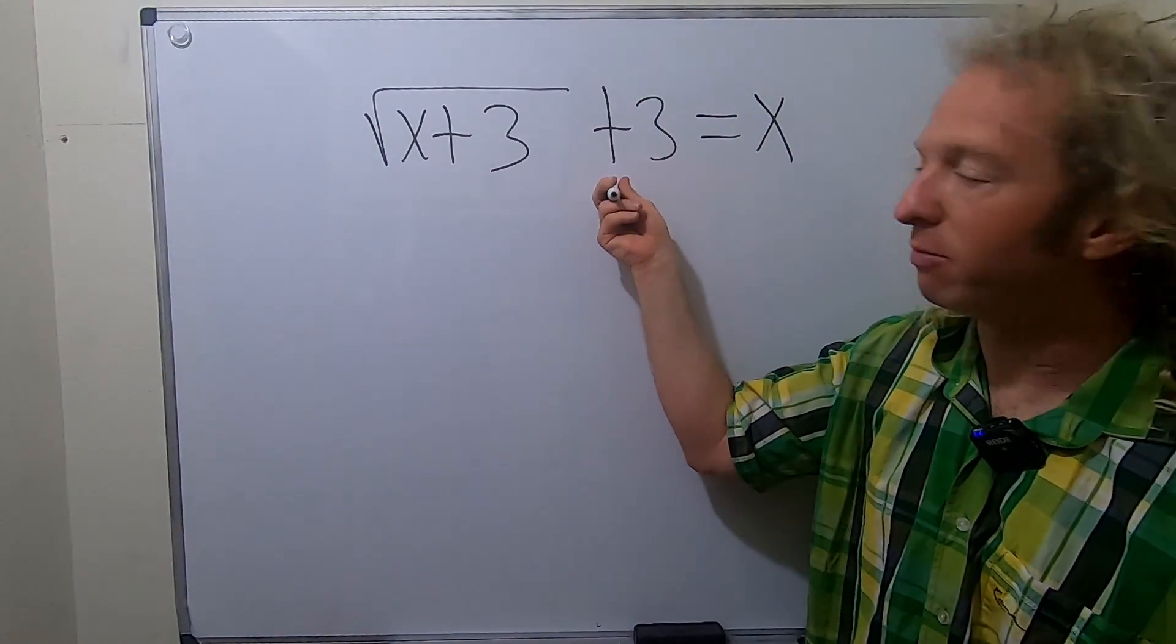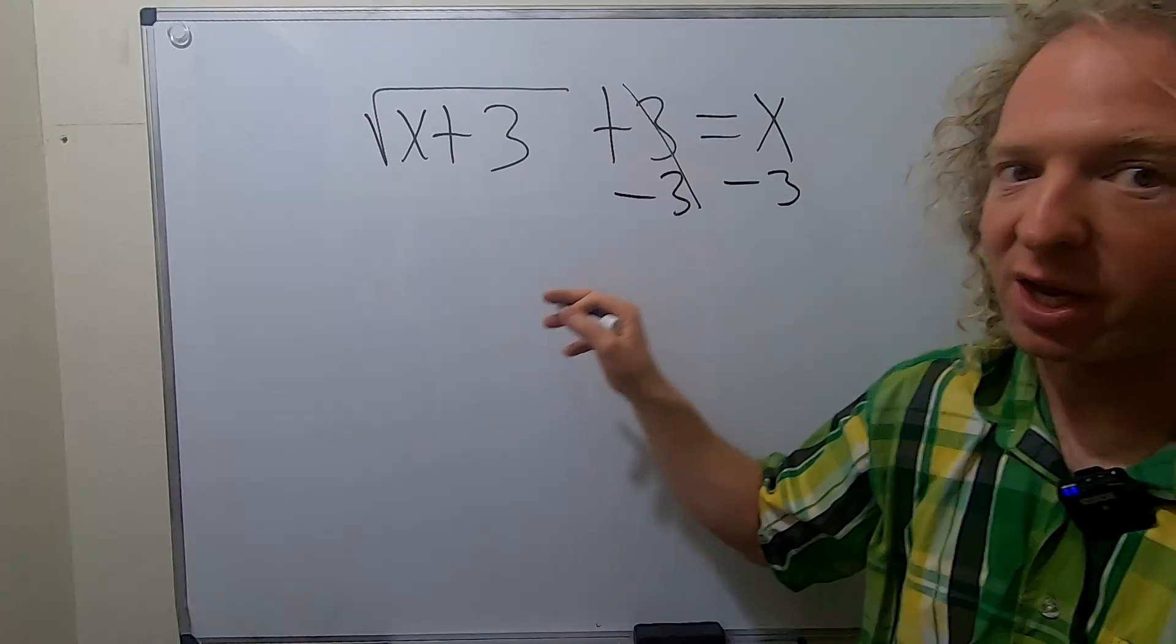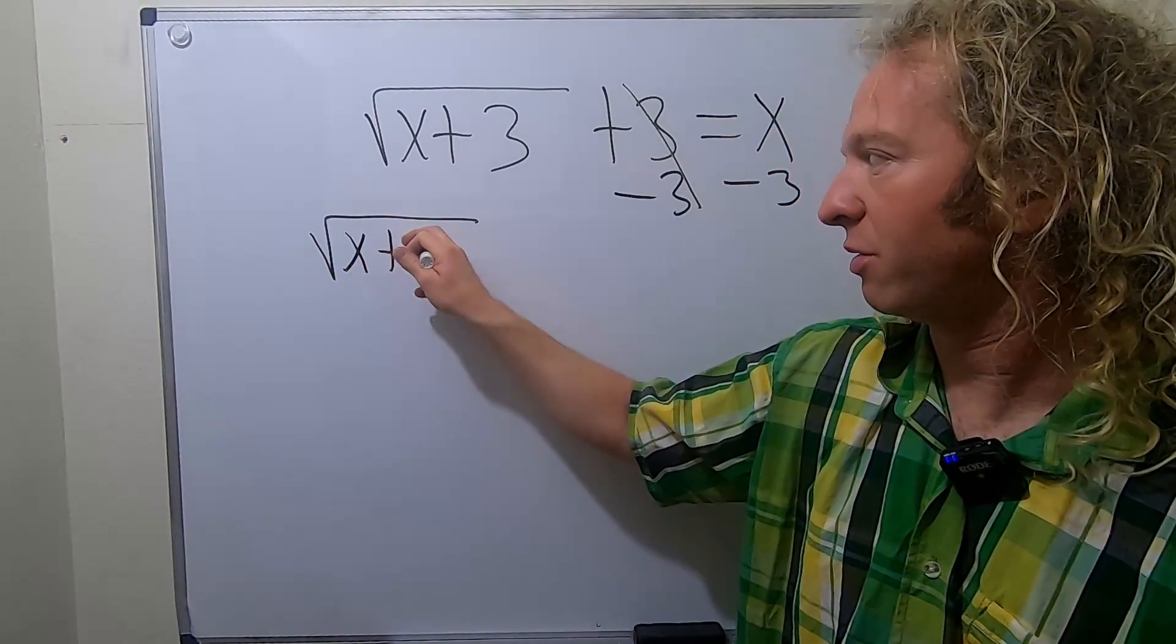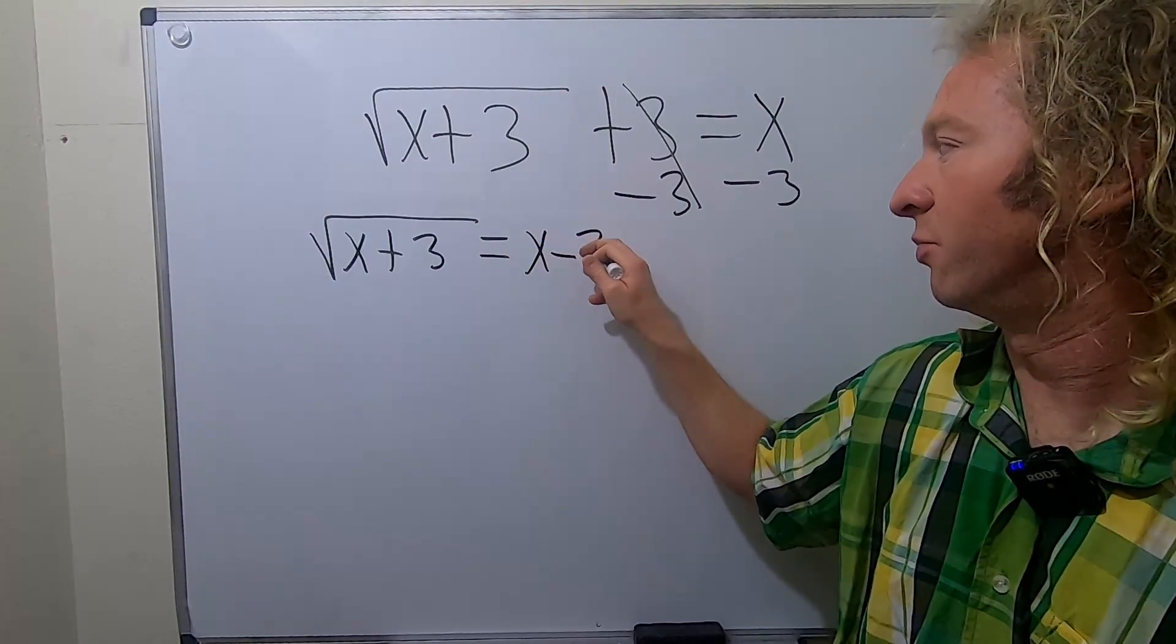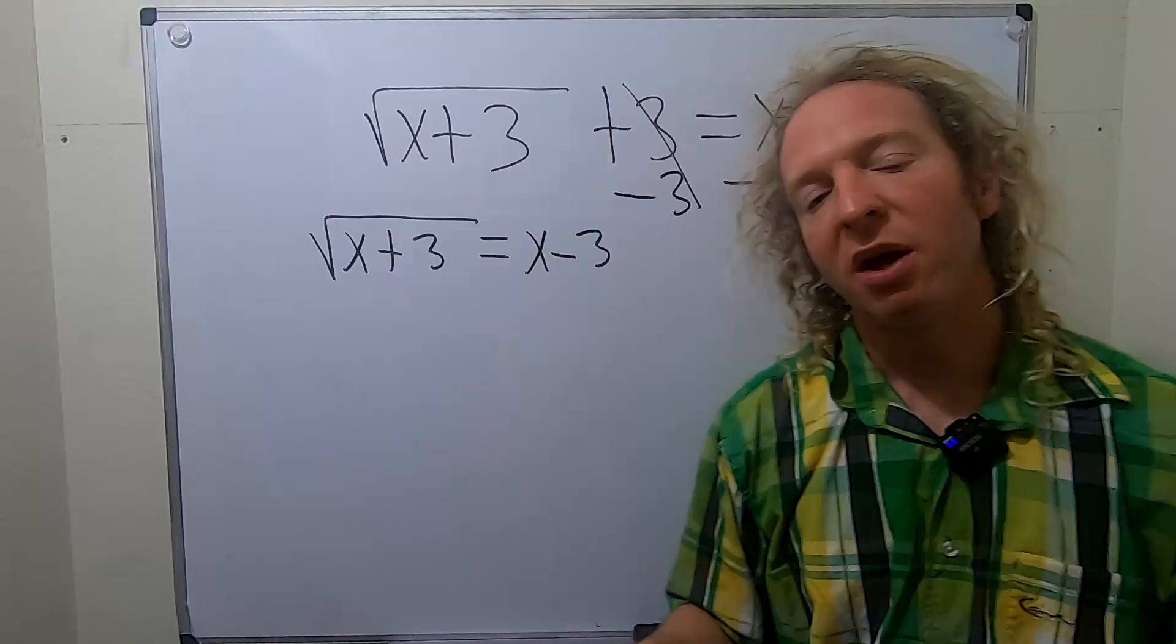We'll start by subtracting 3 from both sides, so minus 3, minus 3. We end up with the square root of x plus 3 equals x minus 3. Step 1: isolate the square root.